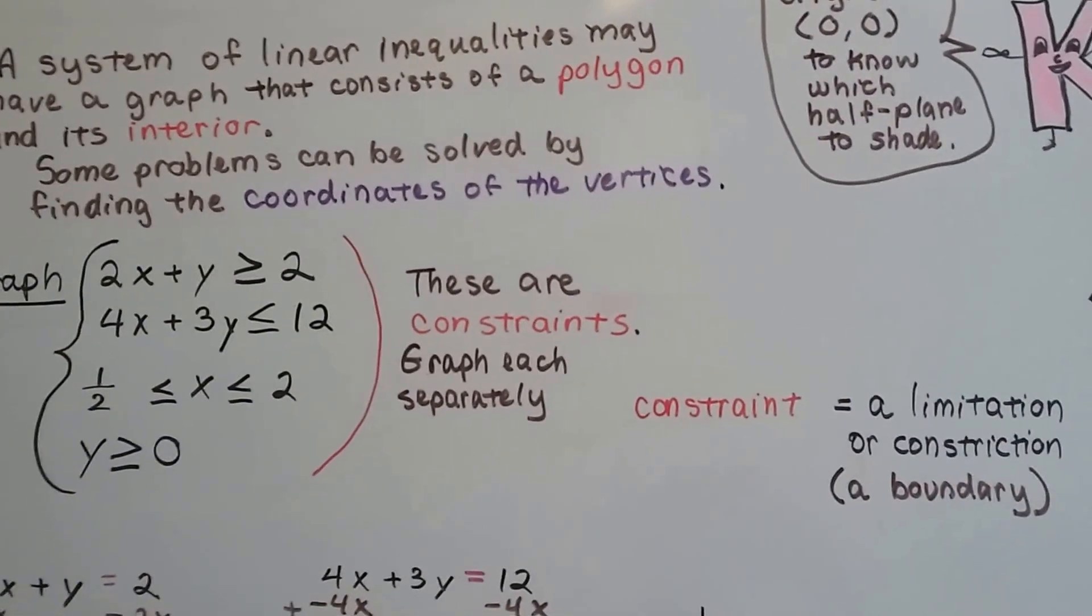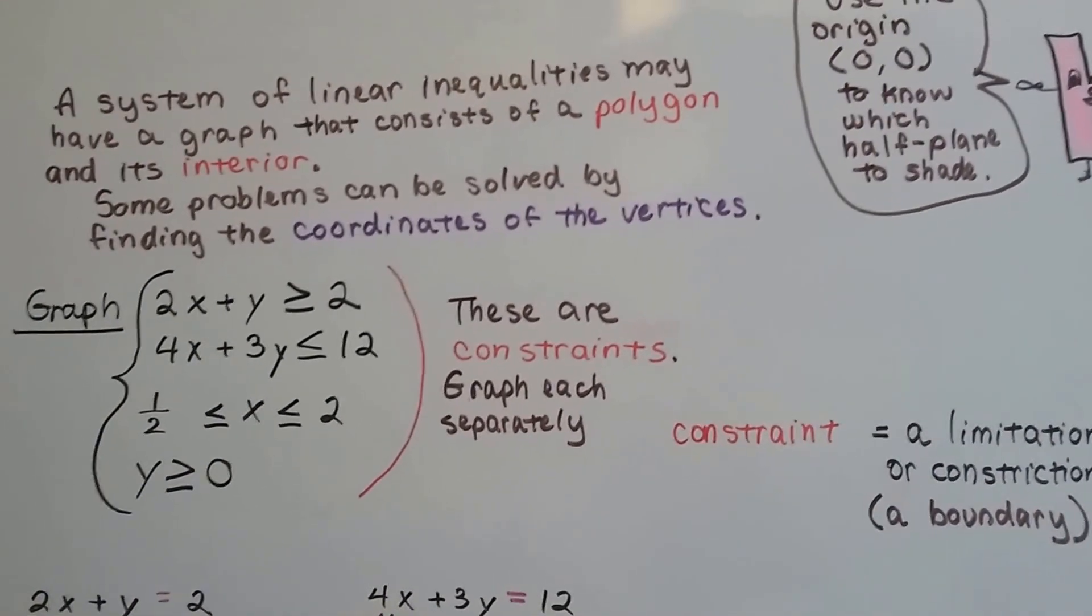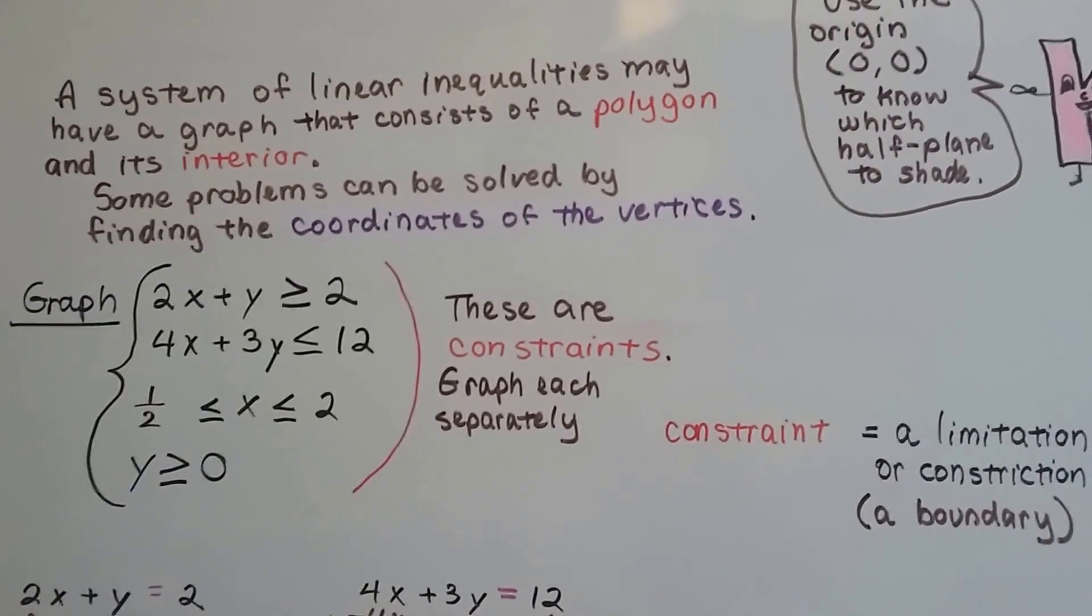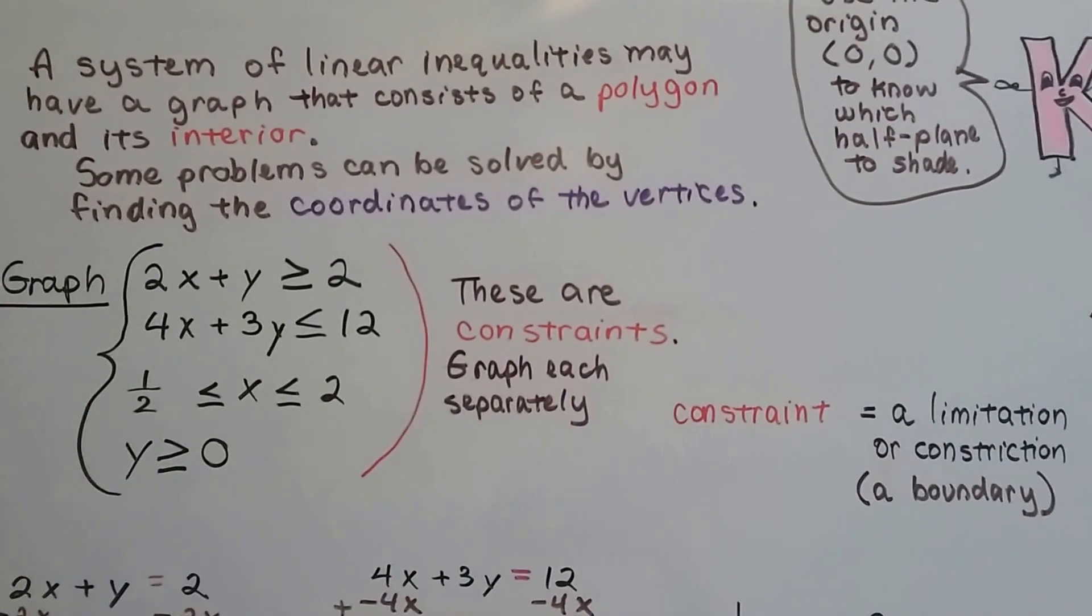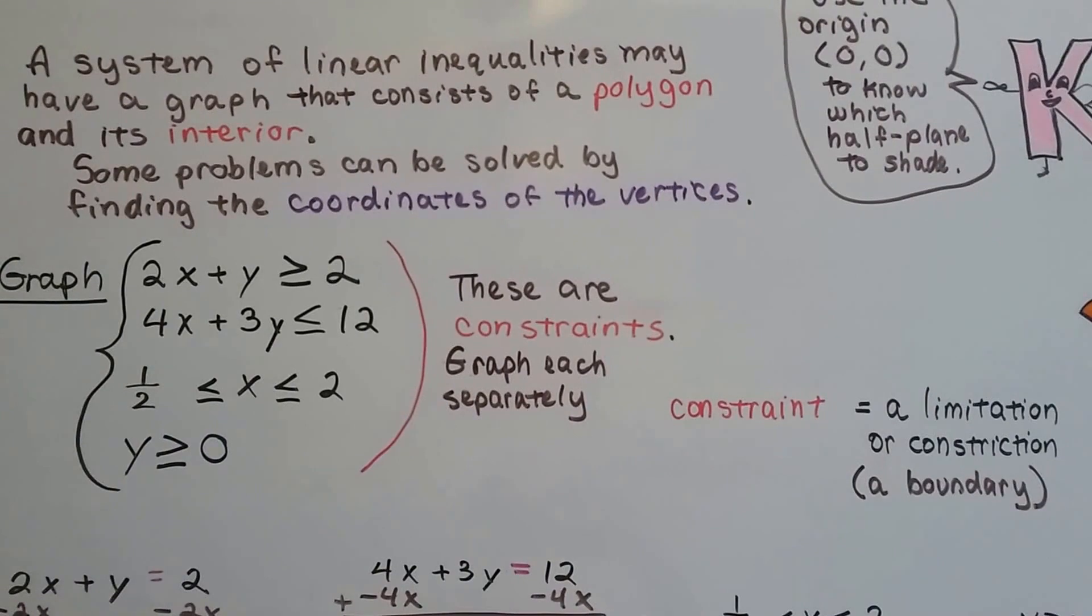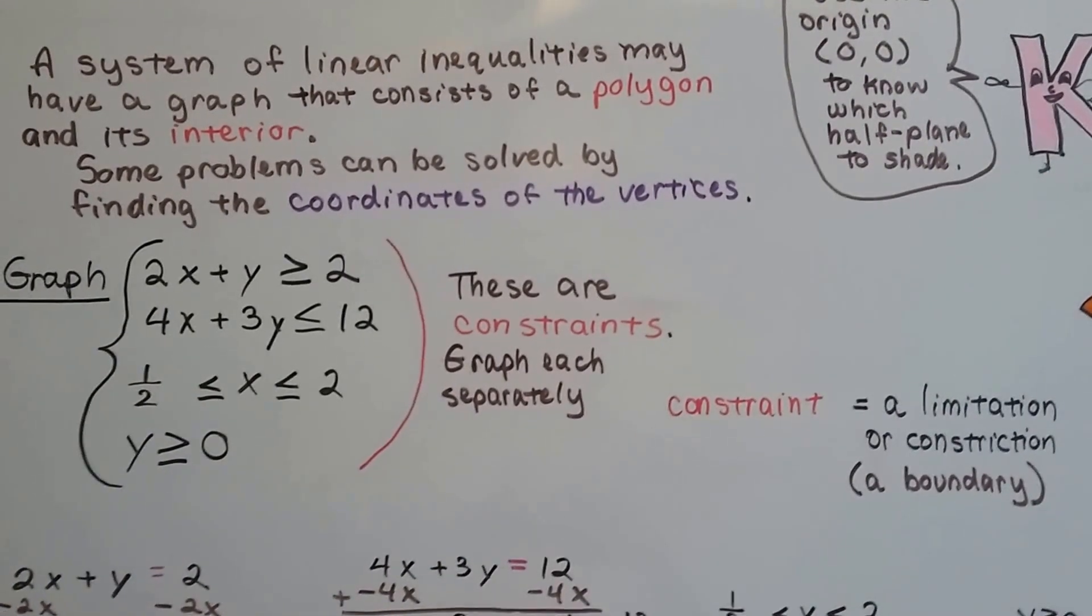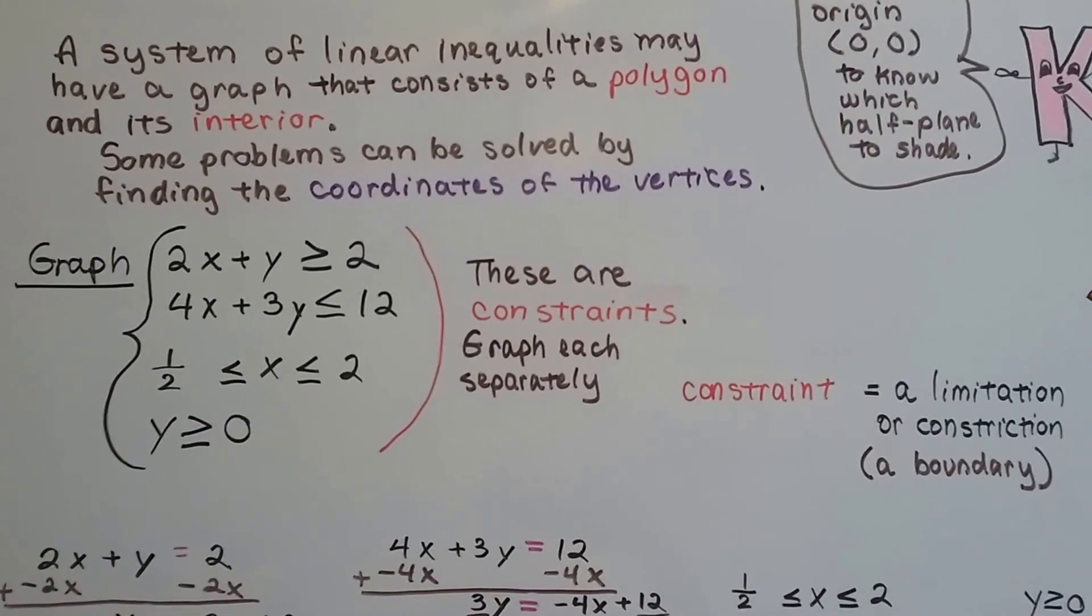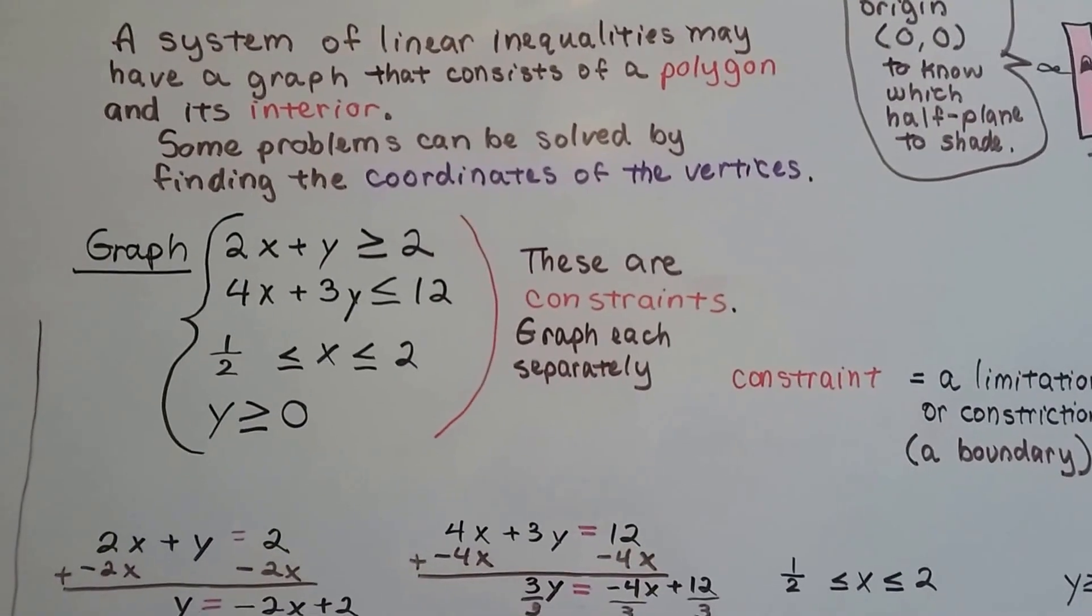Now, a constraint is a limitation or a constriction. It's a boundary line. So if you have a curfew of 9 p.m., that's a constraint. You can't go past. You'll get in trouble. So if you want to go somewhere that's far away, you can't if it's close to your curfew. So it's constraining you. It's keeping you, limiting you from where you can go because of that time. Or a ball in sports going out of bounds. That's a constraint. That boundary line.